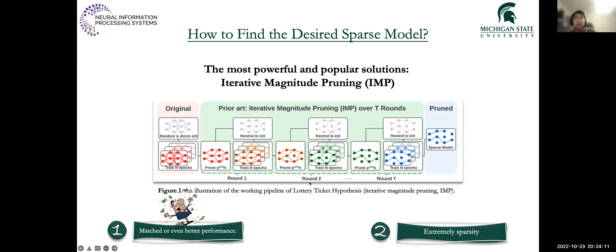Although IMP is very powerful and effective in terms of finding winning tickets, it still suffers from high computational cost. The reason is that to reach the target sparsity level, IMP has to decay its pruning ratio exponentially with respect to its pruning round to ensure the best performance. Therefore, for some extreme sparsity scenarios, IMP can take much more time even than training a dense model from scratch.